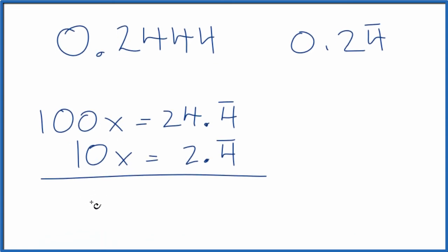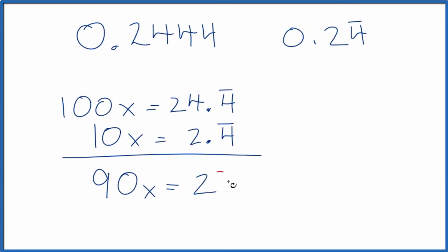So 100x minus 10x, that's 90x. And that equals 24.4 repeating minus 2.4 repeating. So we end up with 22.